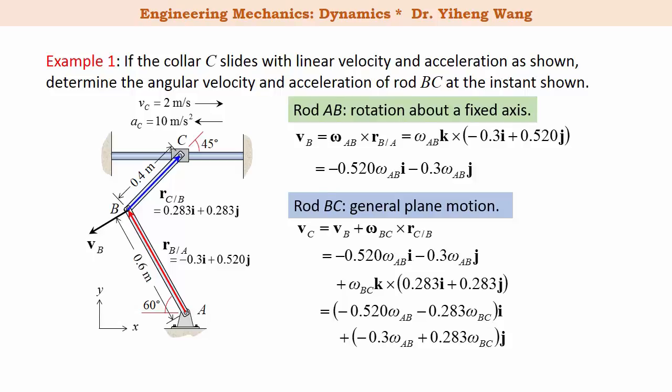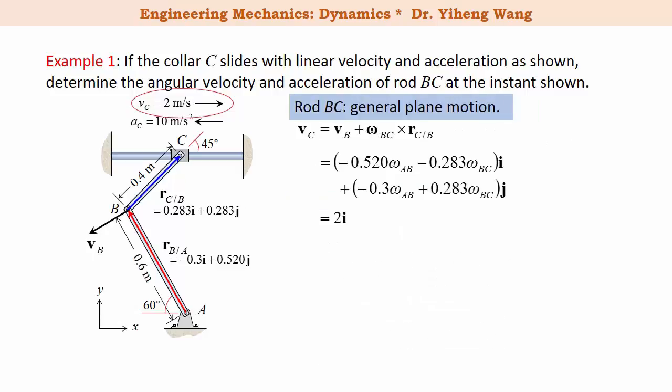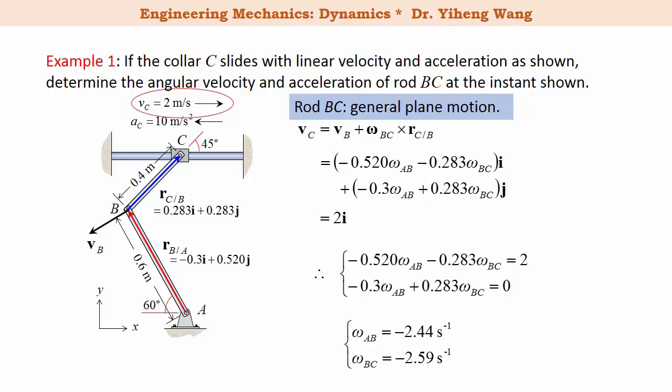The unknowns are the magnitudes of the angular velocities of rod AB and rod BC. However, the velocity of collar C is given as 2i in Cartesian vector form. Therefore, the vector equation becomes two scalar equations — one for the i components and one for the j components — and from these we can solve for both unknowns: the angular velocity of rod AB and the angular velocity of rod BC. The negative sign indicates that the rotation of rod BC is clockwise.